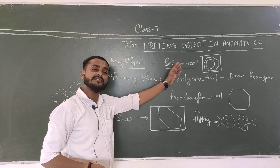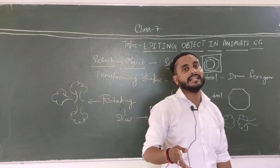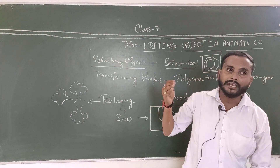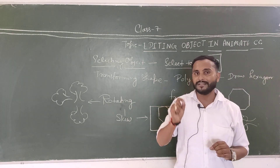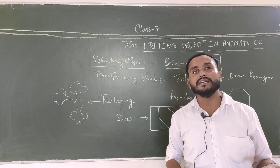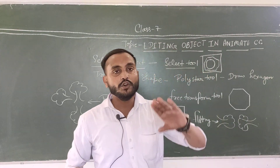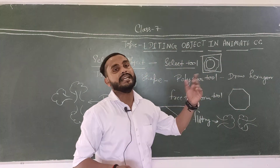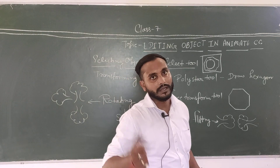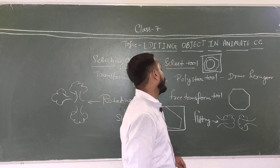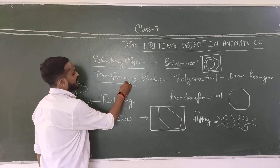Select करना है तो Selection Tool use करते हैं। कभी-कभी हम confused रहते हैं कि कौन सा tool use करें, लेकिन थोड़ा common sense यूज़ करोगे तो पता चलेगा — जो task complete करना है उसी से related नाम भी है। जैसे select करना है तो Selection Tool। अब बात करते हैं Transforming Shapes की।